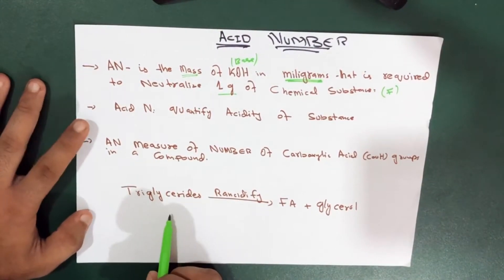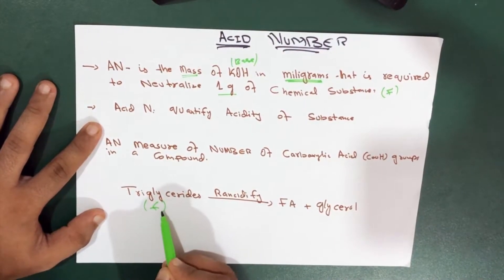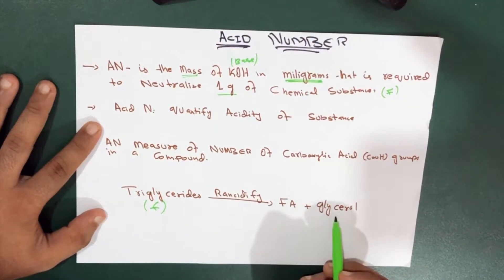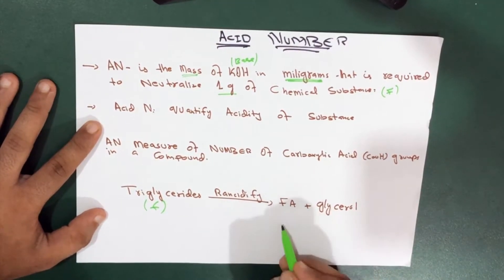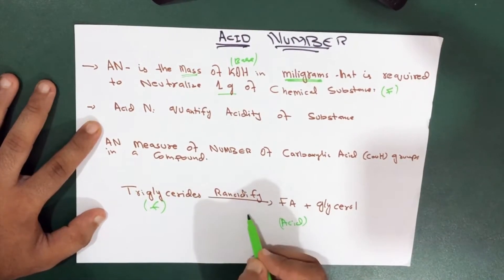For example, we have the triglyceride. Consider the triglyceride is a fat. When this fat is converted into fatty acid and glycerol, what happens? The fatty acid is actually an acid through rancidification, through the process of rancidification.